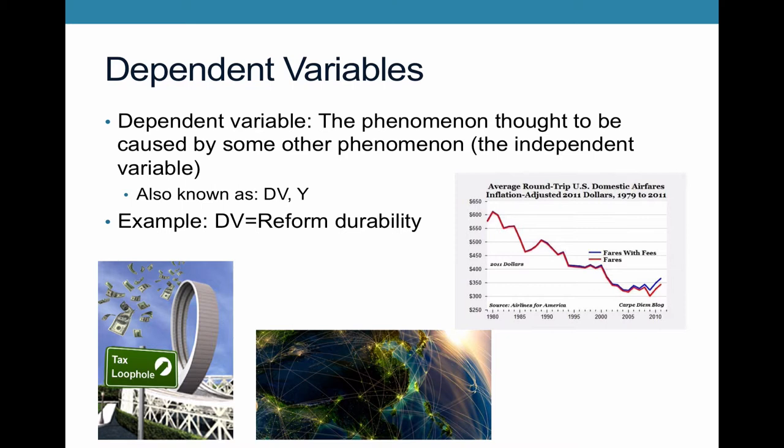To sum up, the dependent variable — this outcome — is the durability of reform. In the tax reform example, it was not durable at all, completely undermined after a couple of years. In the example of the airline deregulation, it was durable: you don't see a reemergence of regulation.